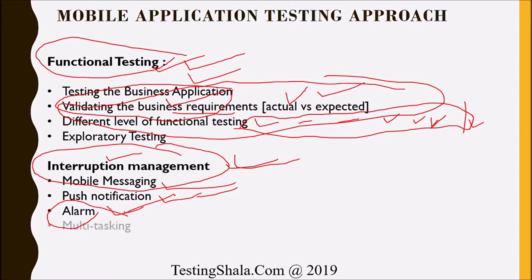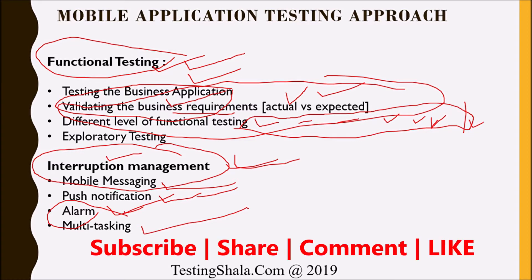We also perform multitasking testing — opening multiple apps from different vendors alongside the app under test, and validating each piece of functionality during multitasking to ensure nothing is breaking. Functional testing is the fifth type and interruption testing is the sixth type of testing we do as part of mobile app testing.